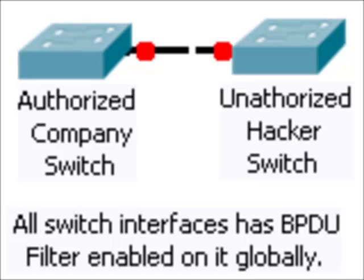When we power up the switch, port fast will put the authorized switch port interface into the forwarding state, shown by the green link lights. The unauthorized hacker switch sends out BPDUs to the authorized company switch, which disables port fast and BPDU filter on the interface. In other words, the interface will begin normal spanning tree protocol operation.